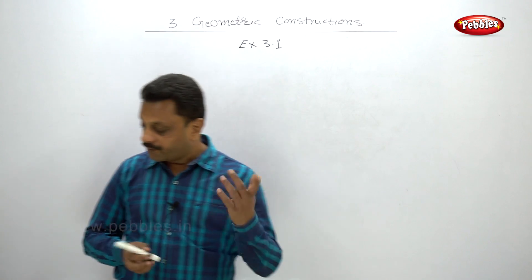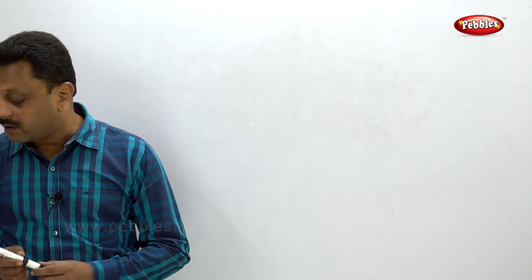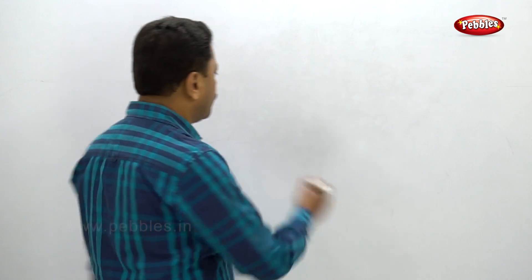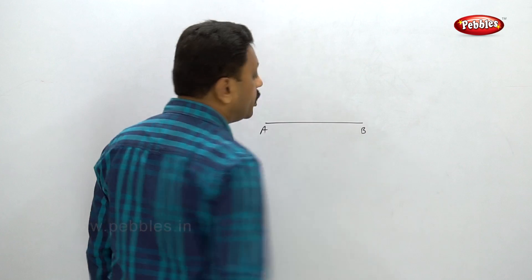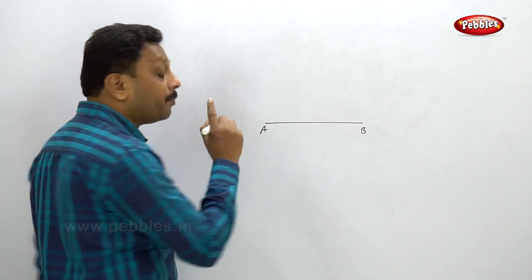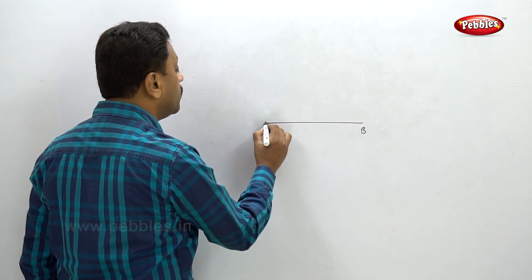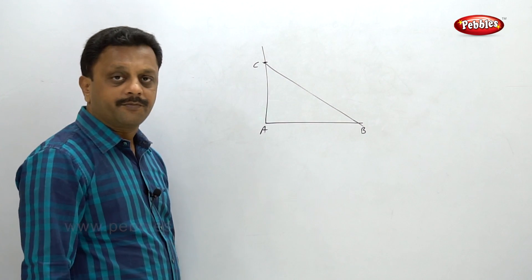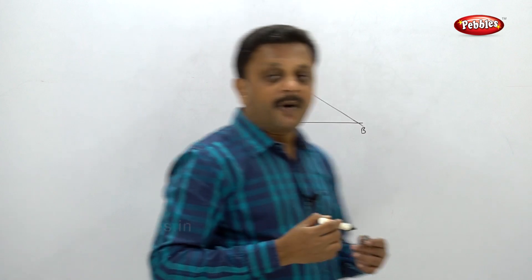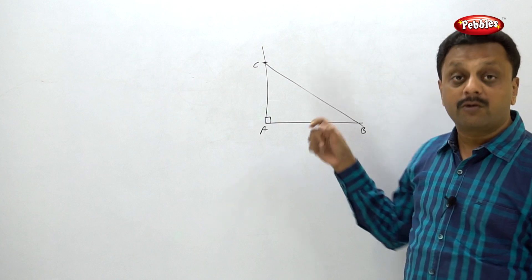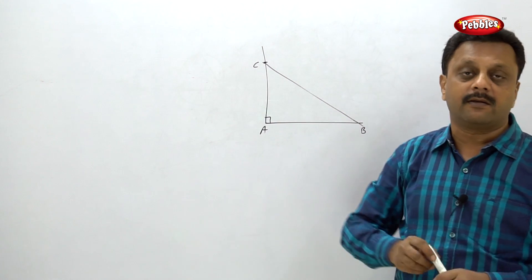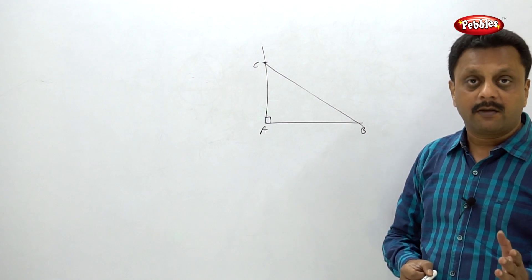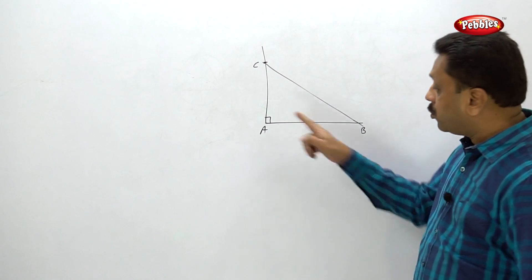Example eight: construct any right-angle triangle — no specific measurements are given. Draw some line AB, then construct a perpendicular to AB through point A. Take any length along the perpendicular to mark point C, then connect BC. Important: do not use a protractor to measure 90 degrees; you must construct the perpendicular geometrically using a compass.